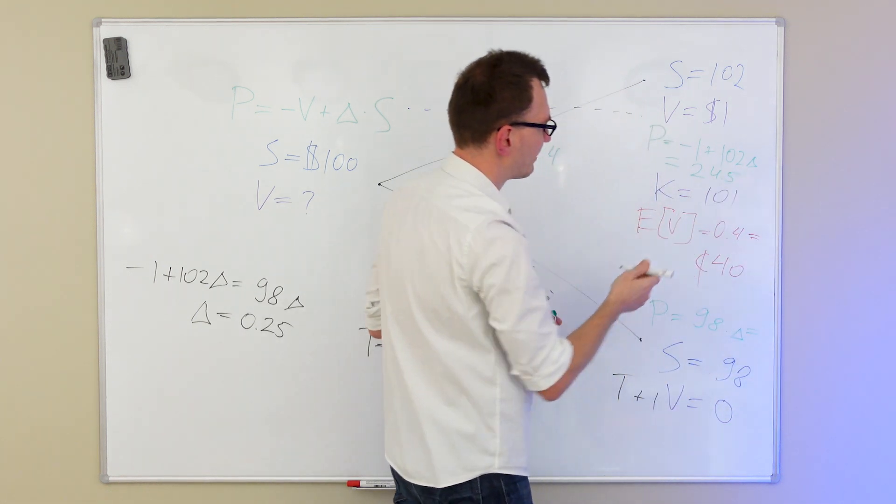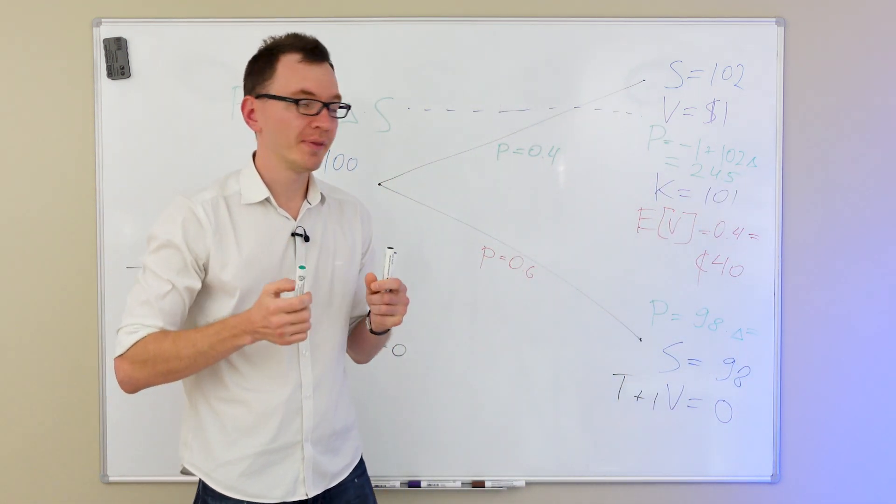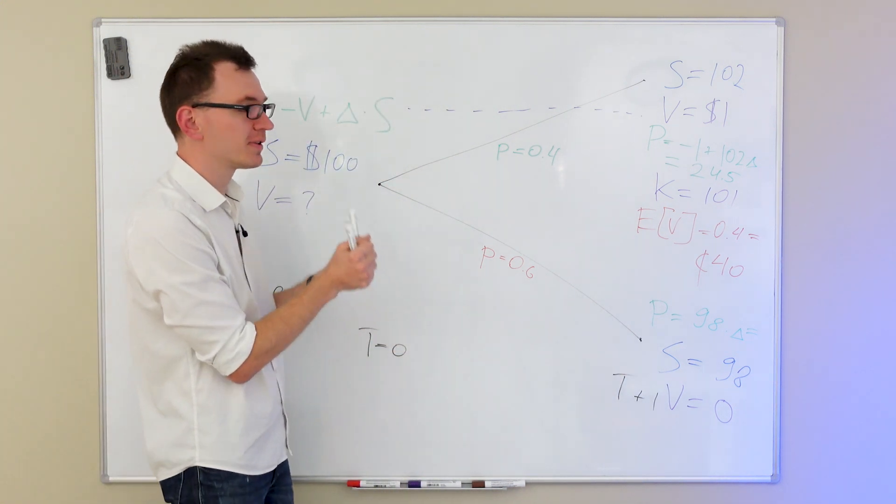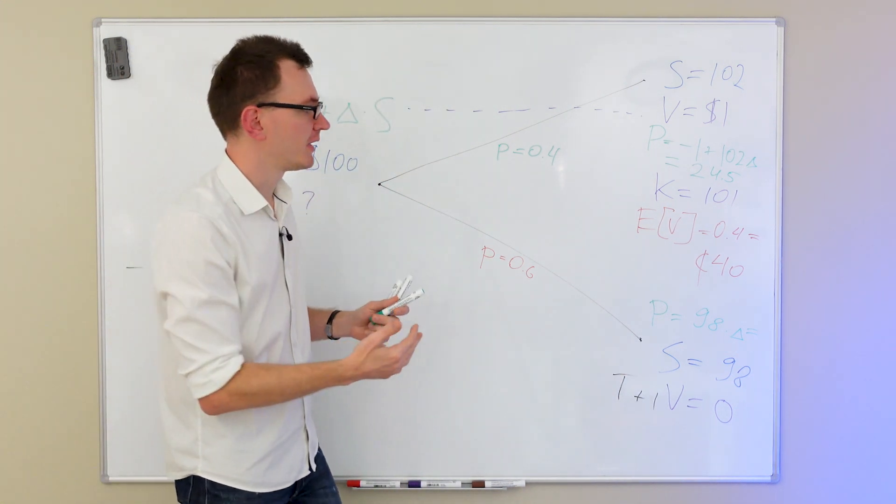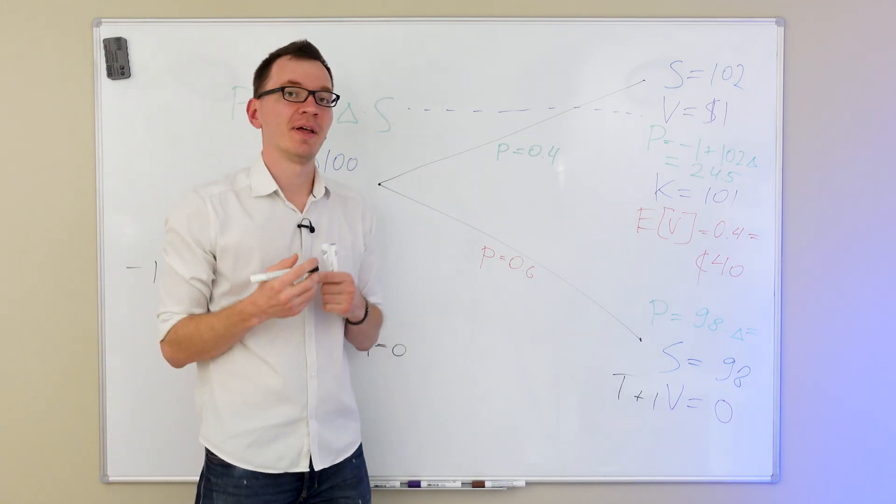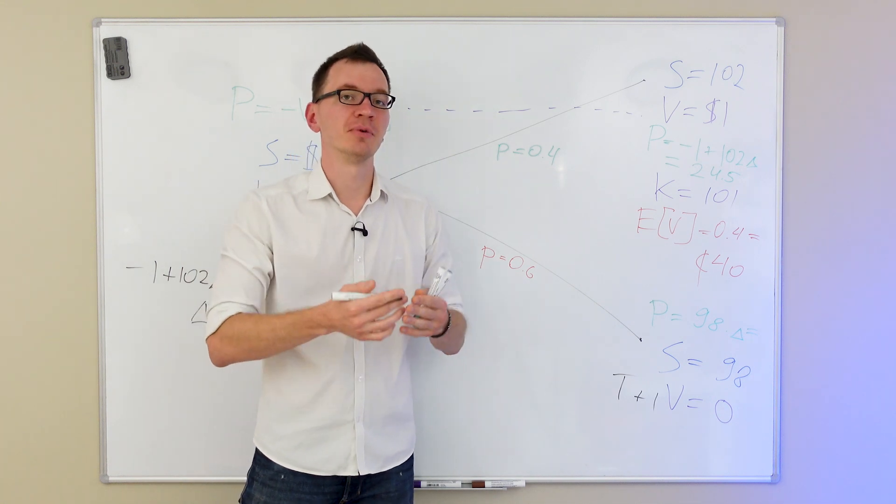And actually, we can calculate the value of the portfolio if we plug in the delta number back into the portfolio value. And if we do that, we find that in both of these cases, portfolio's value is 24.5 dollars. And in the down state as well, it's the same 24.5 dollars. So the portfolio value is constant. And since it's constant, it's risk-free. Since it's risk-free, we know the future value of this asset.